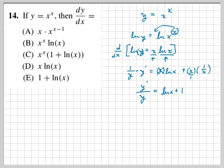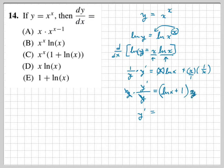We haven't isolated y prime yet. We multiply both sides by y to get y prime alone. We know y equals x to the x from the original equation. Substituting that in, we get y prime equals x to the x times the quantity 1 plus natural log of x. That's our answer — letter C.